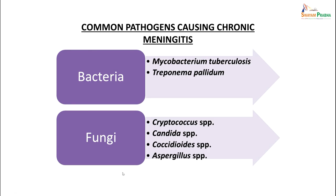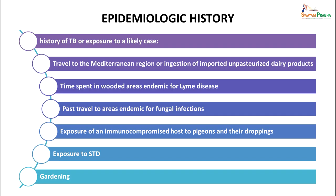Common pathogens causing chronic meningitis include amongst bacteria: Mycobacterium tuberculosis and Treponema pallidum. In fungi: Cryptococcus species, Candida species, Aspergillus species or Coccidioides species. Epidemiological history is important — patients usually have history of TB or exposure to a likely case, travel to Mediterranean region or ingestion of unpasteurized dairy products, time spent in wooded areas endemic for Lyme disease, travel to areas endemic for fungal infection, exposure of the immunocompromised host to pigeon droppings, exposure to STDs, gardening, etc.